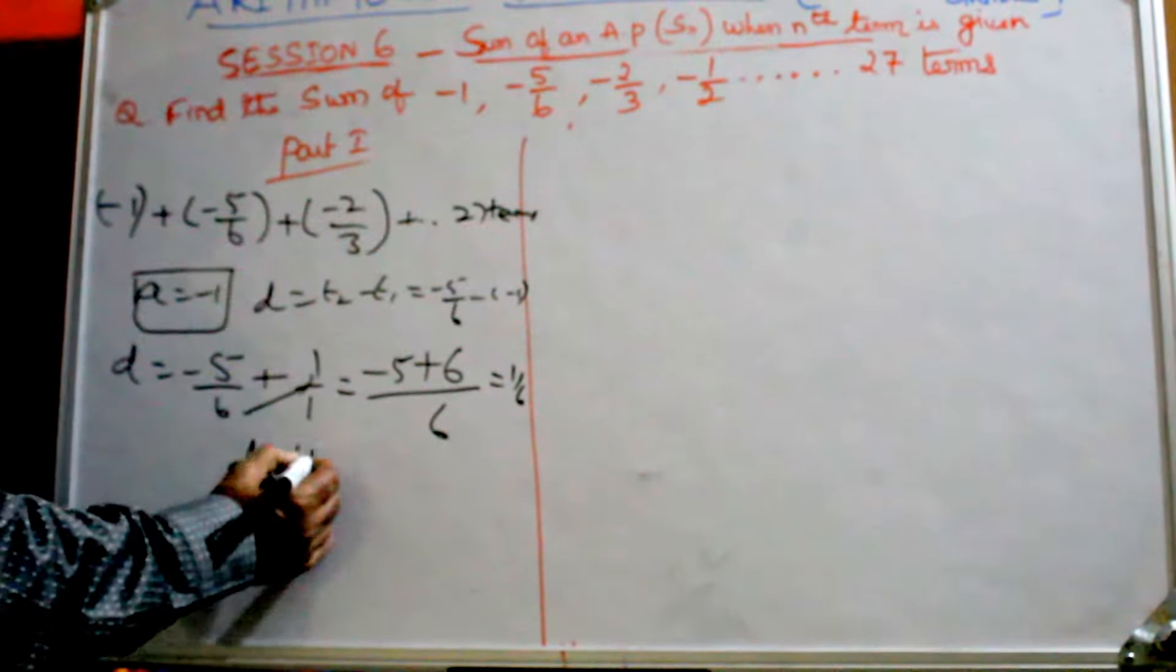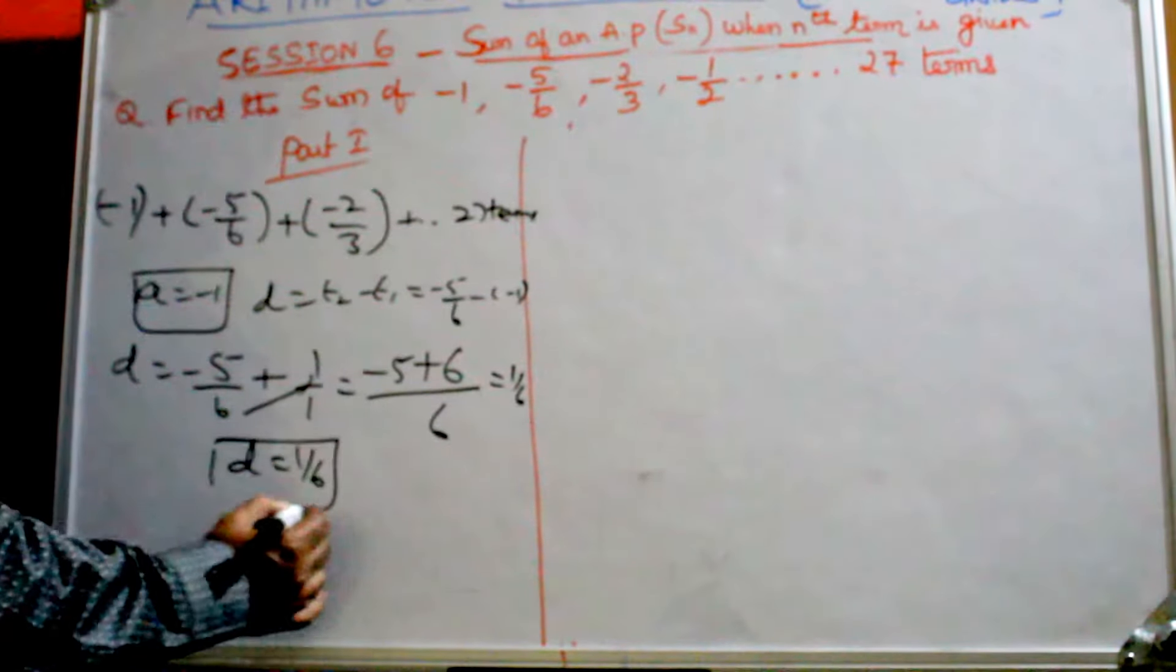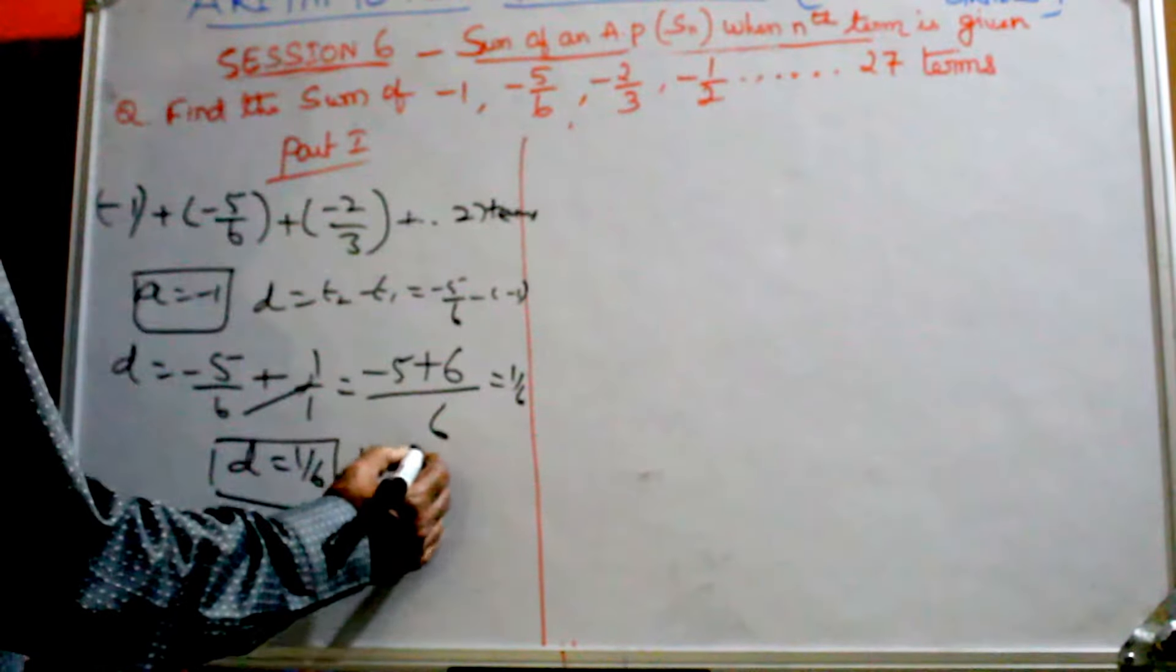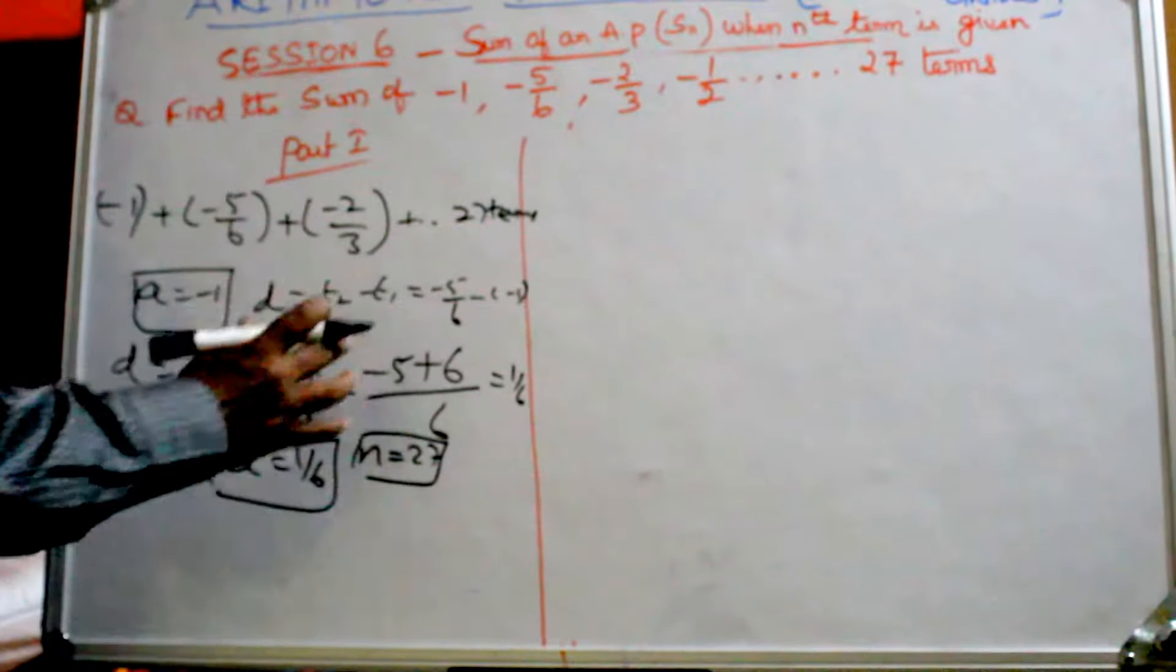So D equals 1/6, and N is 27. This is all part 1.